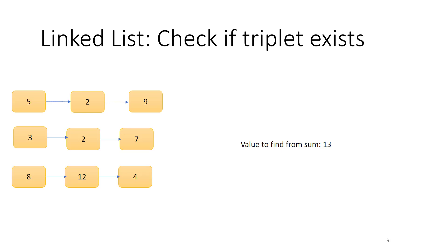Welcome to Coding Simplified. Today we will see a new problem. We are given three linked lists and our aim is to check if any triplet exists. A triplet means picking one item from each linked list such that their sum equals a target value.